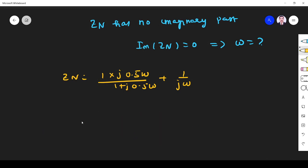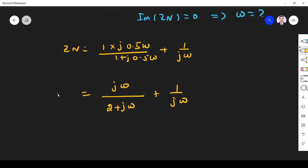If I take 0.5 outside, it will cancel in the numerator. jω will be there in the denominator, 2 plus jω will be there, plus 1/(jω). So this is Z_Norton. If you simplify, it is (2 + jω)/(jω)...